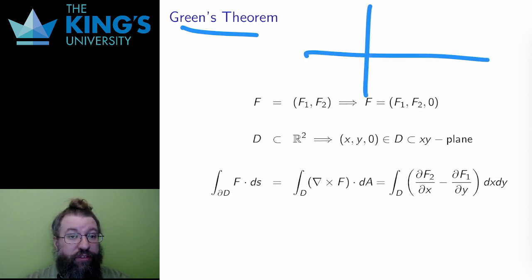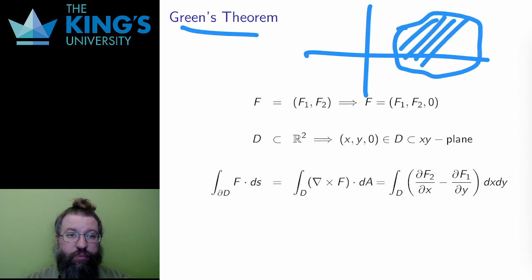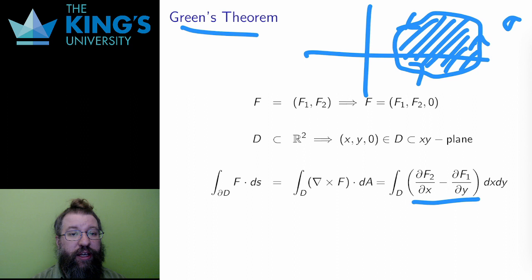If you set all the z coordinates to zero and only look at the xy plane, then the surface is just a region in R2, and its boundary is the counterclockwise path around it. Only one coordinate to the curl will remain, and that coordinate will be del f2 del x minus del f1 del y.